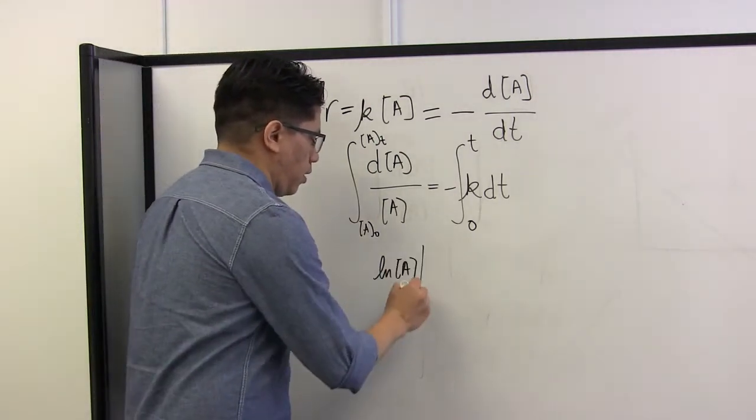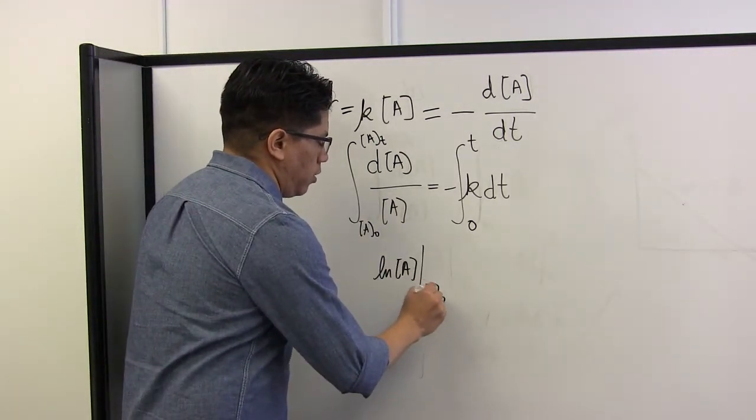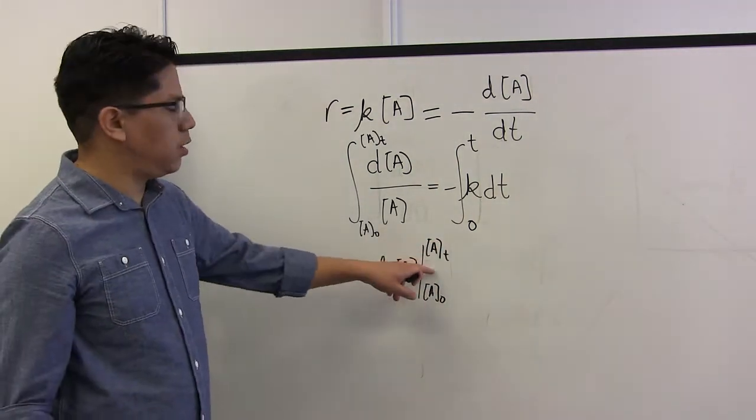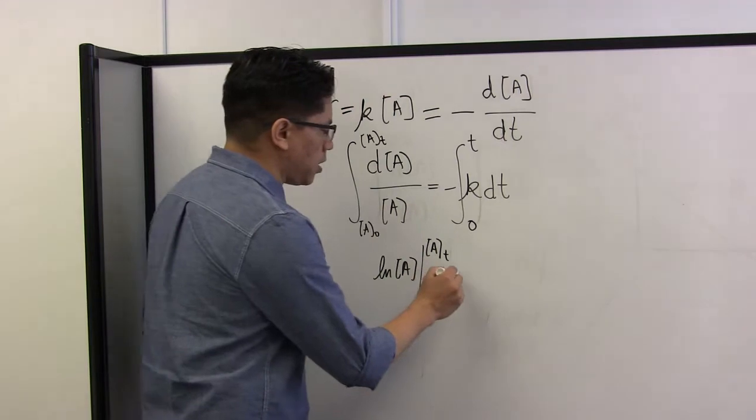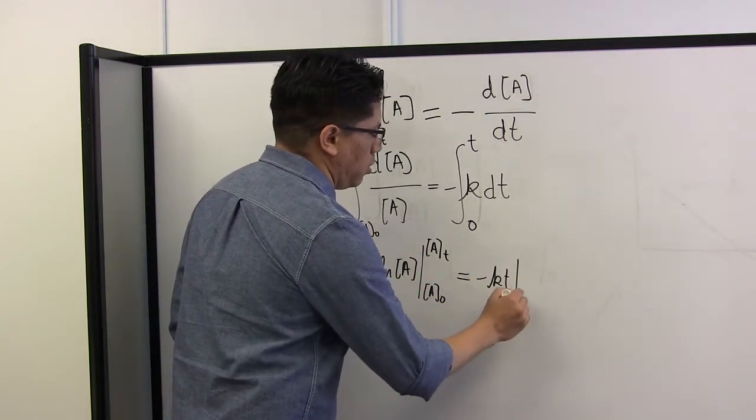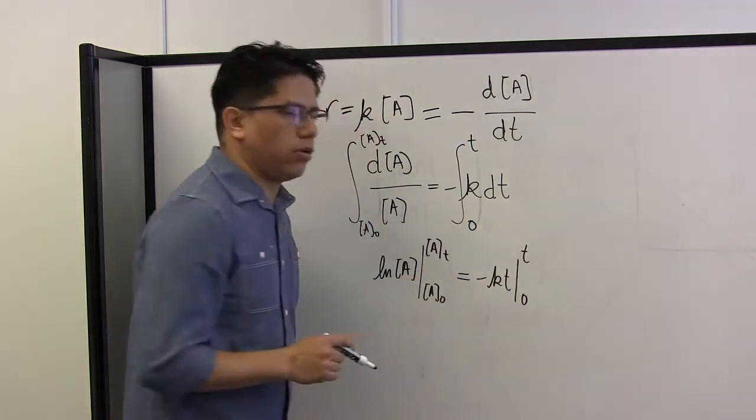We're going to evaluate this between the two limits that we have, when the water leaves the plant and at time t. And the same is going to happen on the other side. We're going to have minus kt and we're going to evaluate between time zero and time t.